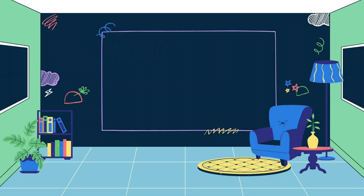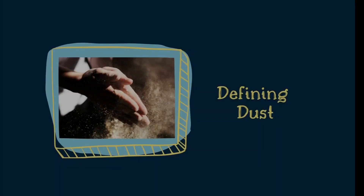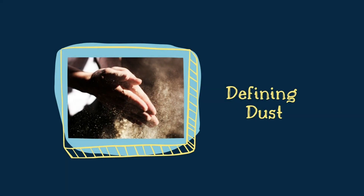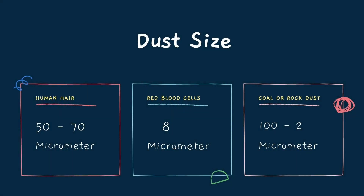In our workplace there are a number of particles which are hazardous to human health, which are present in the form of aerosols — that is, suspension of solid or liquid particles in air. In general, dust is understood to be aerosols of only solid particles of very small size, that is 0.1 micrometer and above.